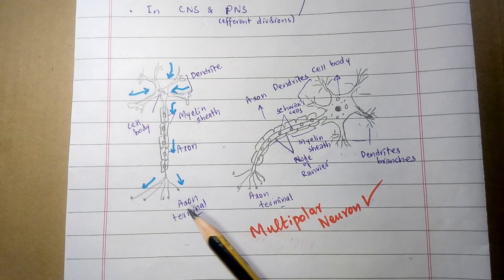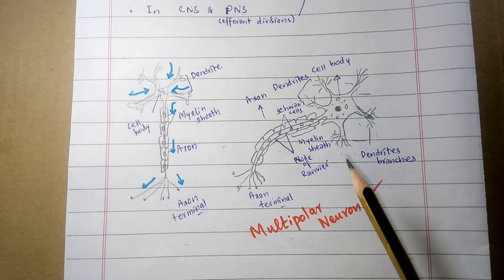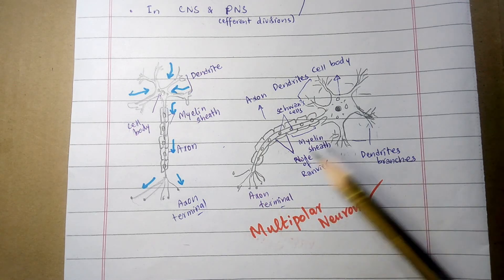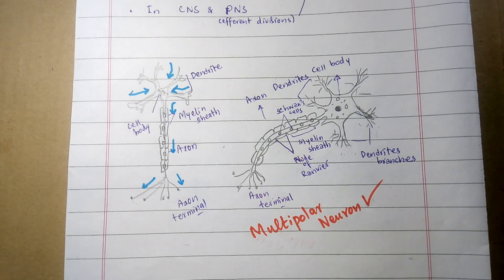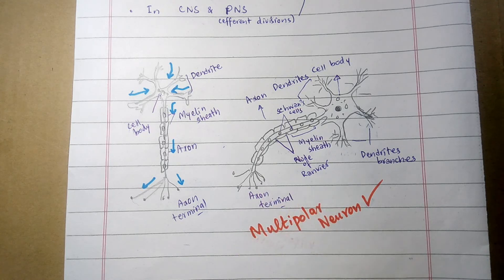So this is all about the structural classification of the neuron: unipolar, bipolar, and multipolar neurons. I hope by watching the full video you have a complete concept of the structural classification of the neuron. Thank you very much.